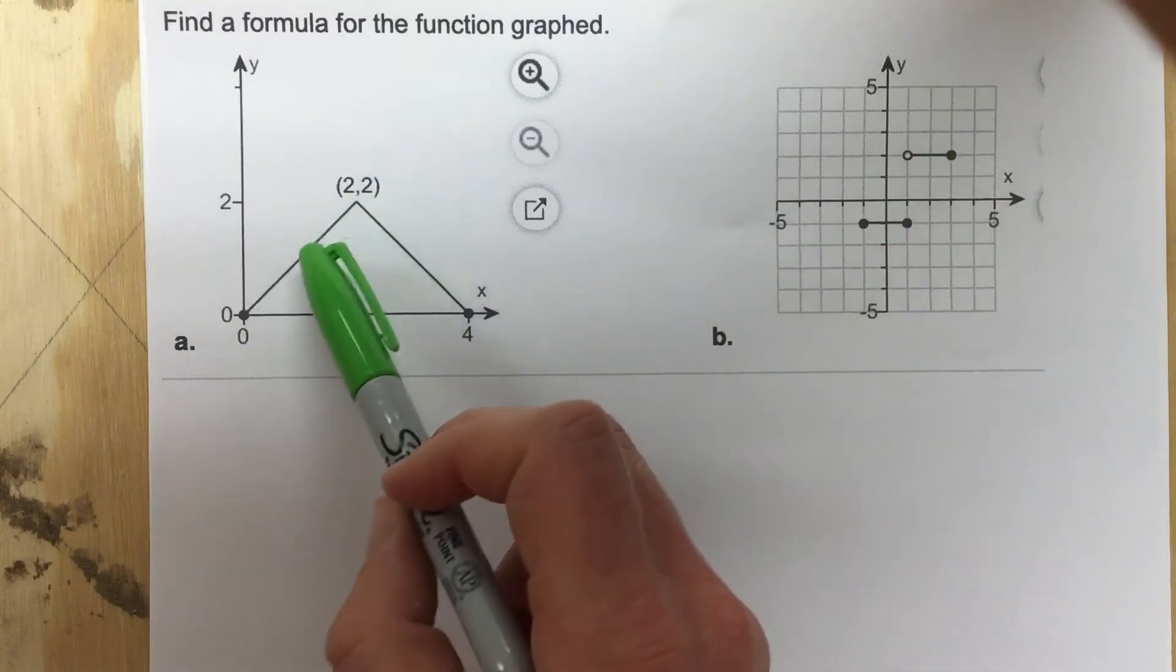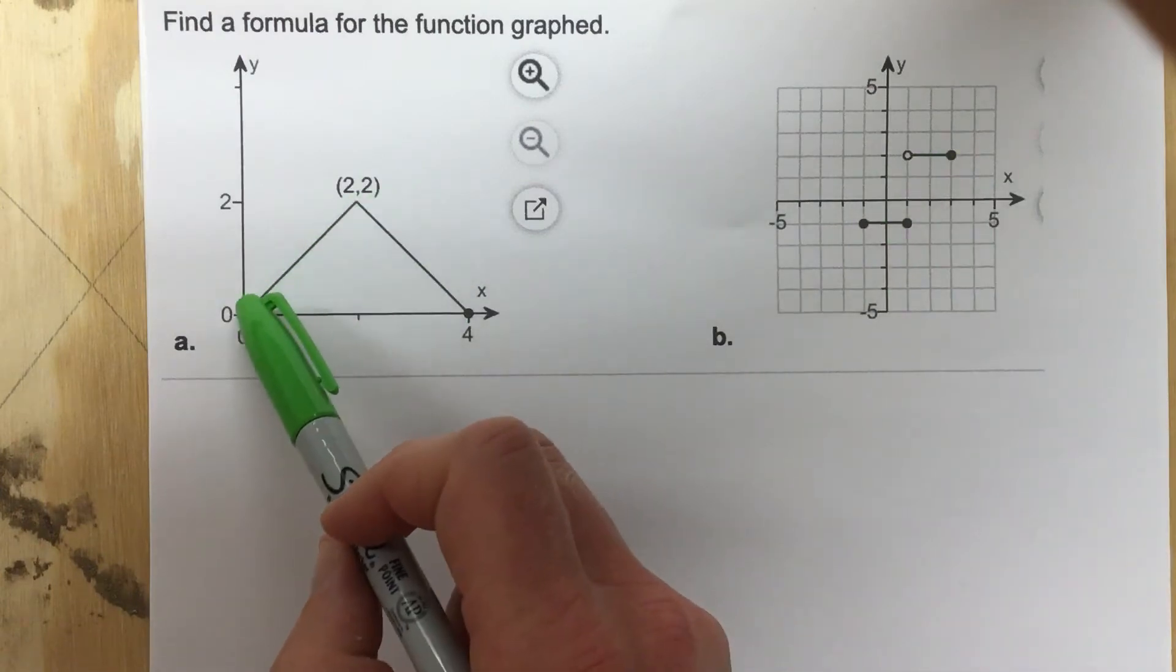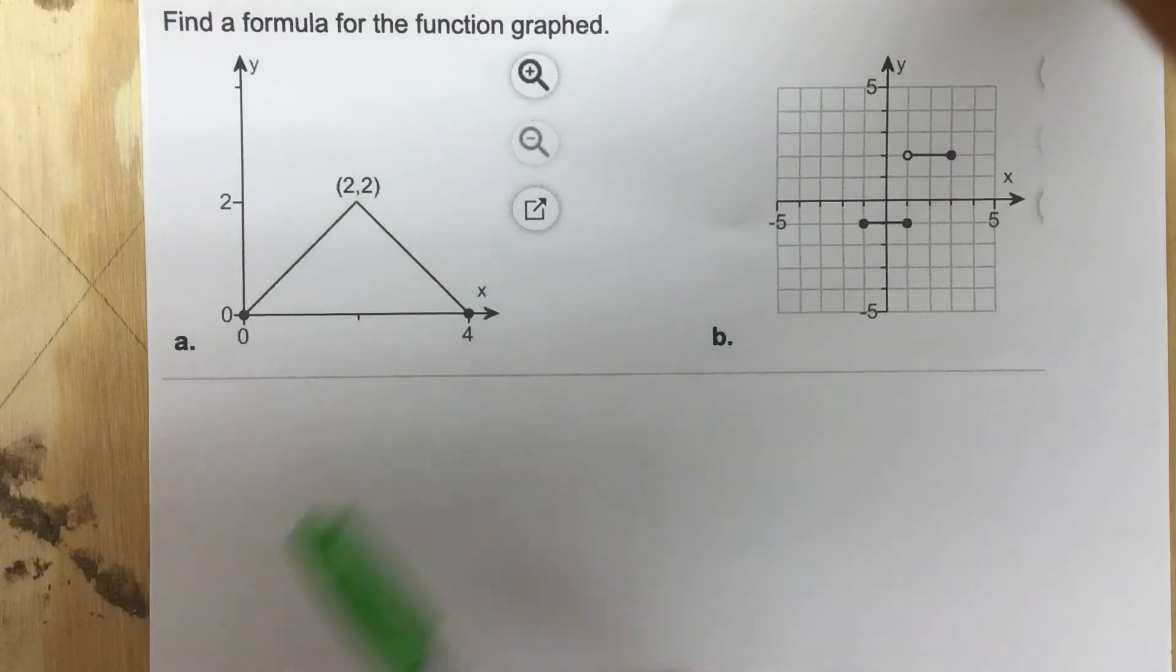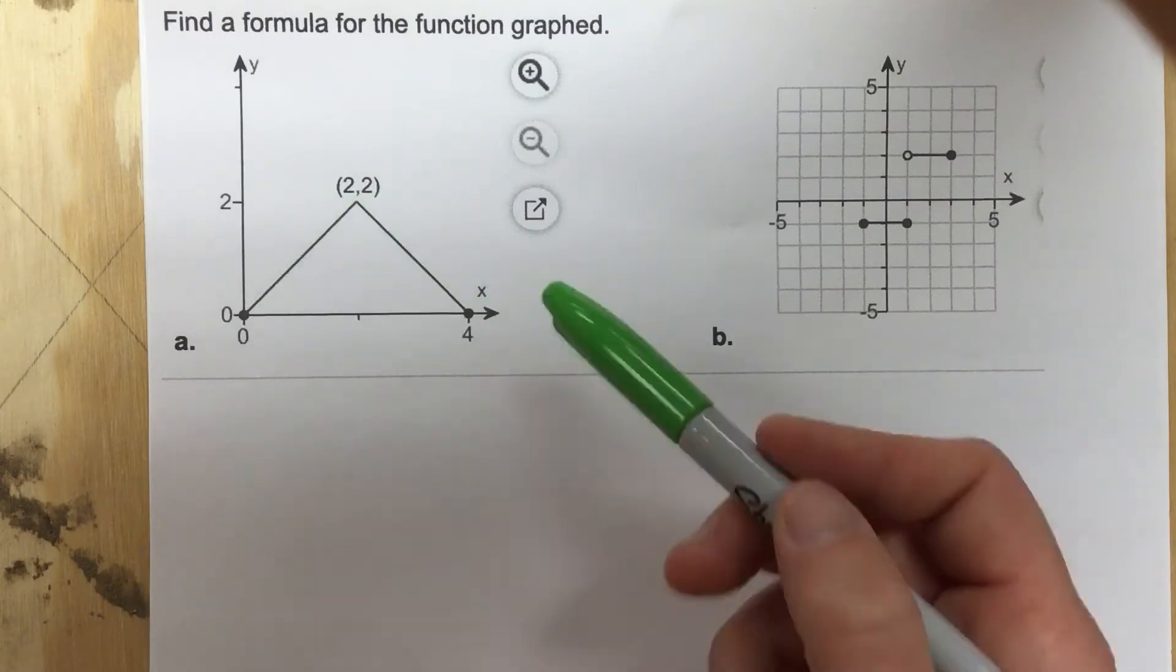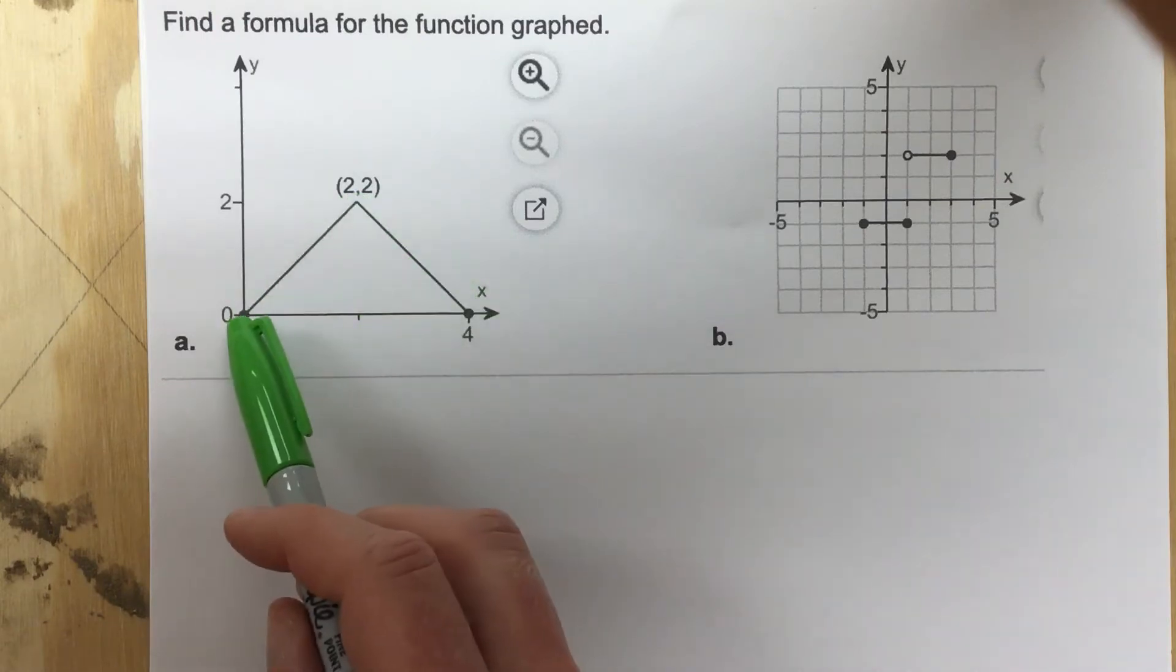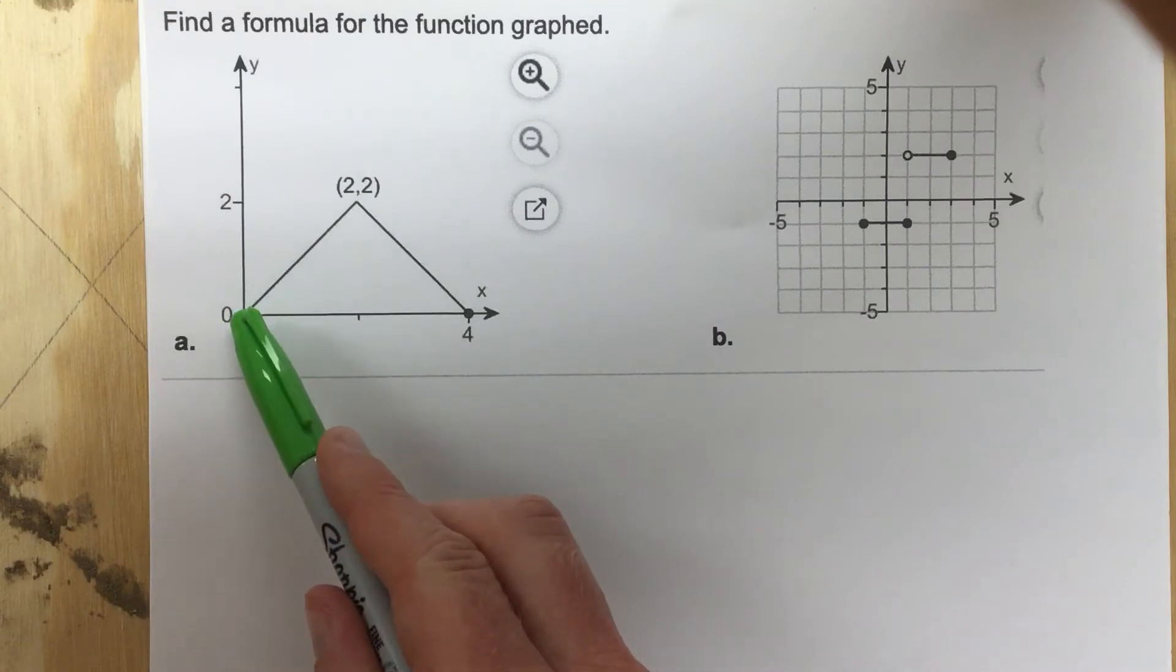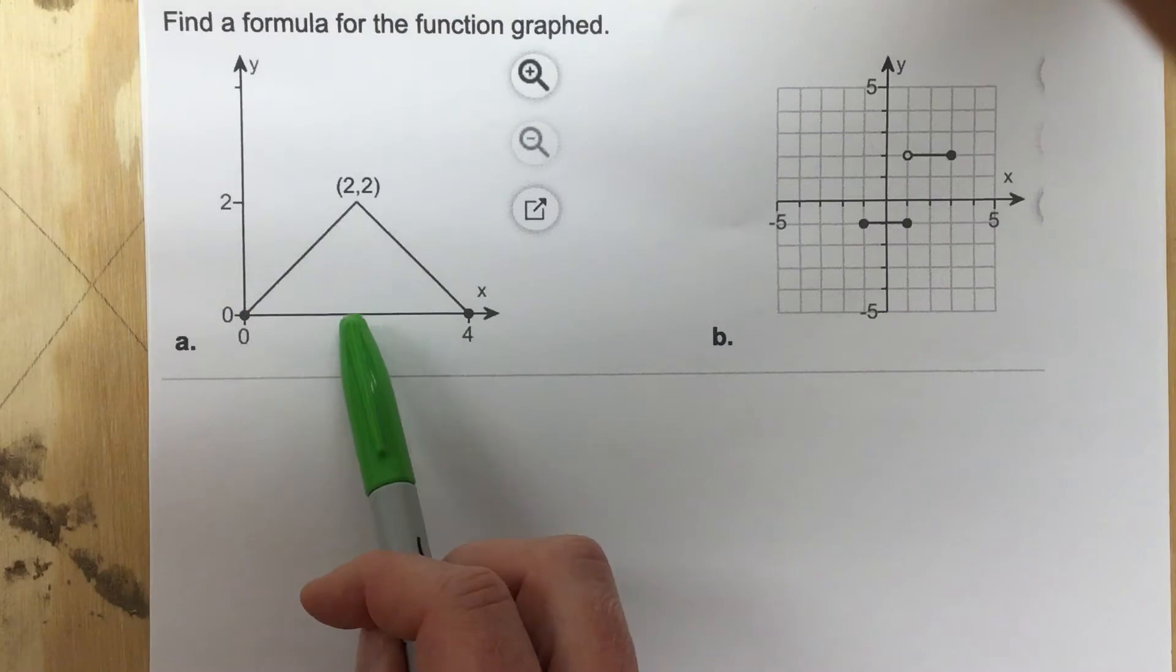This is not a linear function per se because it goes up and then pops back down. Not a quadratic, so on and so forth. This is a piecewise function. We're going to have a certain linear function for the values from 0 to 2 and a certain linear function from values 2 to 4.